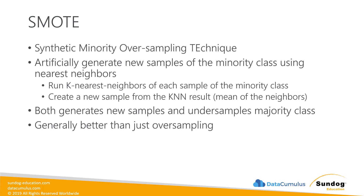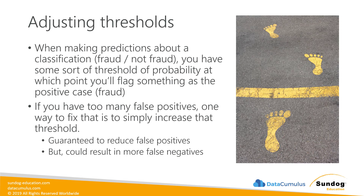If you're dealing with unbalanced data, SMOTE is a very good choice. A simpler approach is adjusting the thresholds when you're making inferences and applying your model. When making predictions for a classification — say fraud or not fraud — you'll have some threshold of probability at which you say this is probably fraud. Most machine learning models don't just output fraud or not fraud; they give you a probability. You have to choose a threshold at which you flag something for investigation. If you have too many false positives, one way to fix that is to increase that threshold, which is guaranteed to reduce your false positive rate, but it comes at the cost of more false negatives.